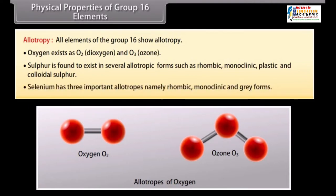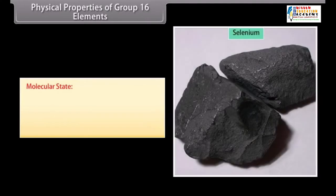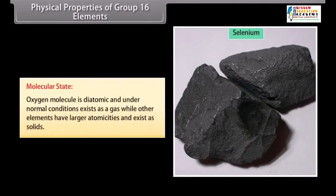Selenium has three important allotropes, namely rhombic, monoclinic and gray forms. Molecular state. Oxygen molecule is diatomic and under normal conditions exists as a gas while other elements have larger atomicities and exist as solids.